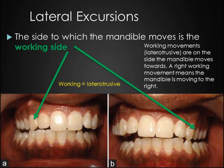This image shows lateral excursions with cuspid rise on the working or laterotrusive side. Note that teeth on the opposite side do not touch. Due to various ligaments, masticatory muscle orientation, and canine guidance, the mandible doesn't move in a directly horizontal manner. Instead, it moves diagonally, so the teeth will also follow a similar path.